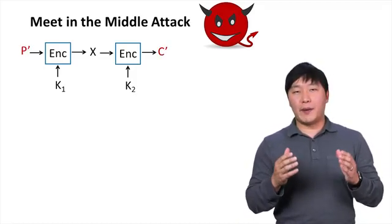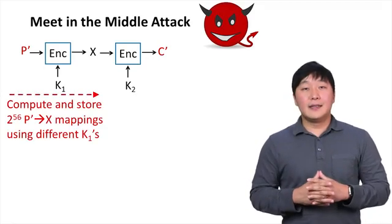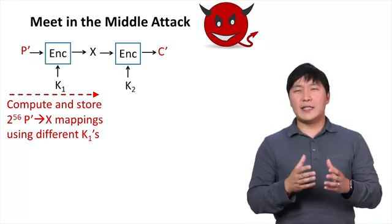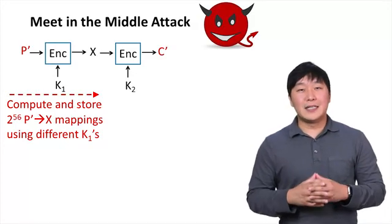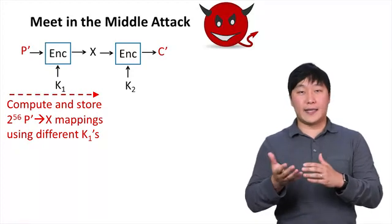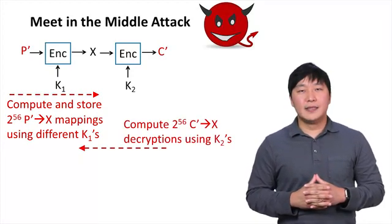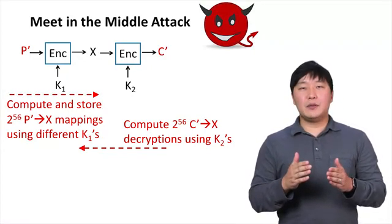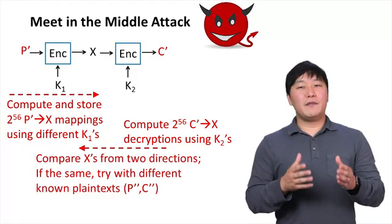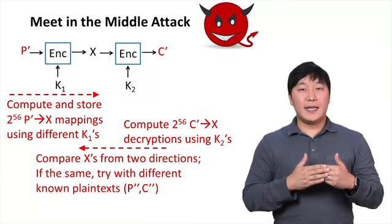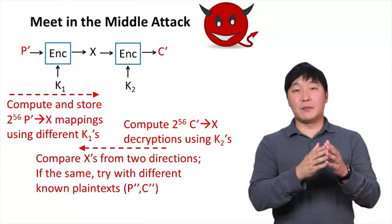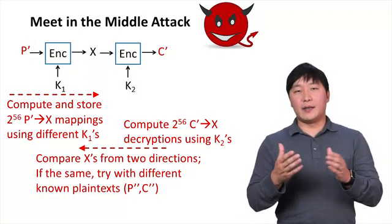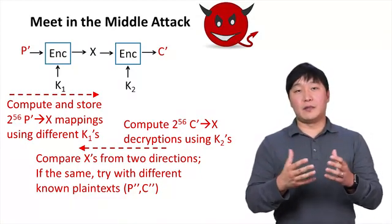Given a known plaintext-ciphertext pair (p and c), the attacker first takes the known plaintext p and computes the first DES function with a key of k1. The attacker varies k1, which it does not know, and stores all 2^56 possible pairs of k1 and x. The attacker then takes ciphertext c and computes in the backward direction — that is, it computes the decryption of c to obtain x. Whenever a decryption result matches a stored x value, it yields a candidate k1 and k2, which can then be tested against another known plaintext-ciphertext pair.